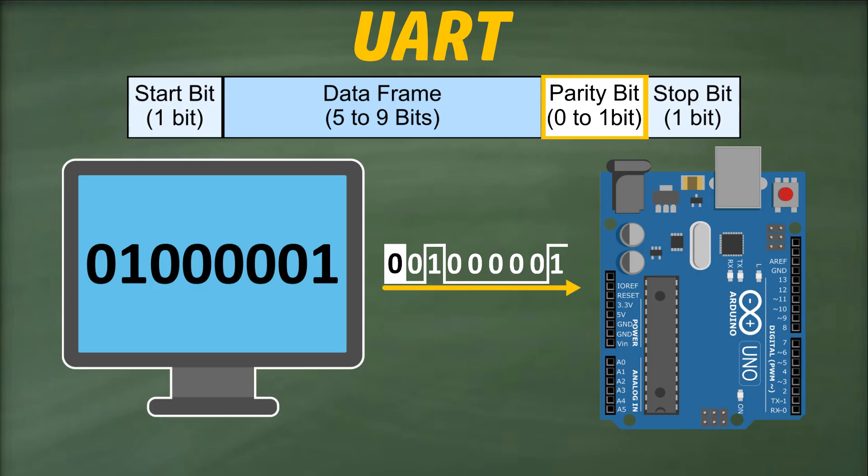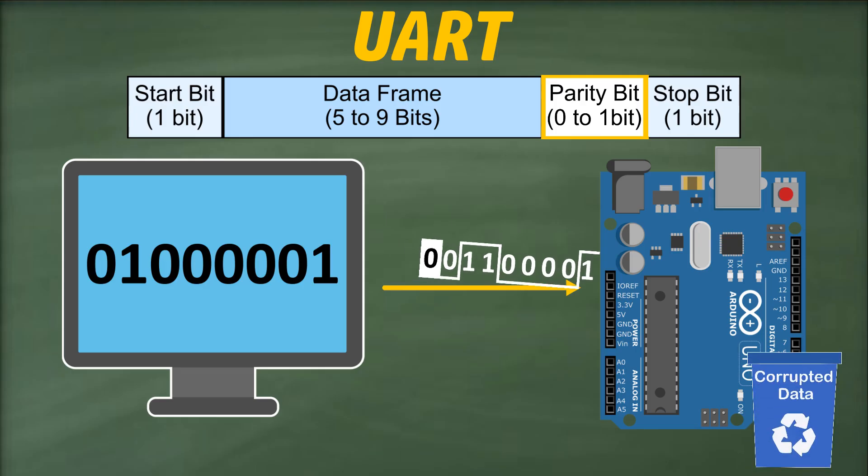Now, if during transmission, the message becomes corrupted and one bit's value changes from 0 to 1, then the receiver will detect an odd number of ones in the data packet. Since they both agreed upon using even parity, the receiver concludes that the message is likely corrupted.